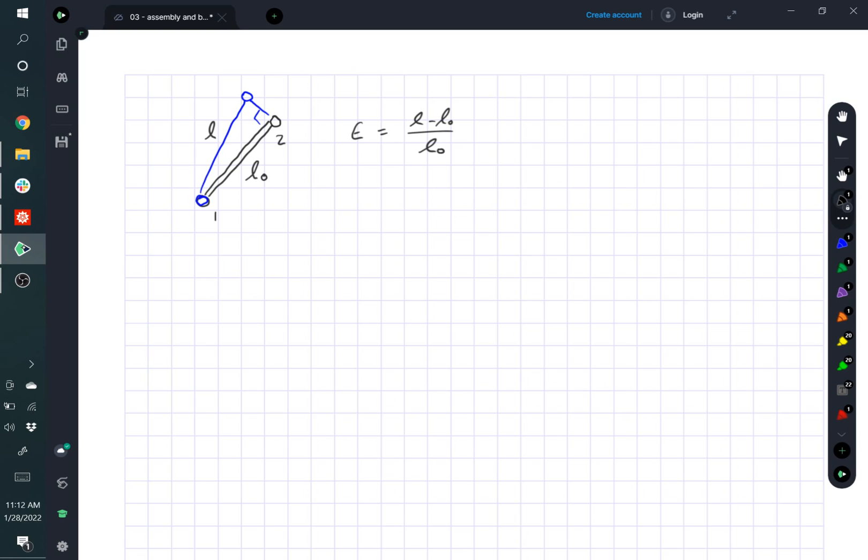It's not linear because of the way we calculate L. L is something like, you know, by the Pythagorean theorem, L is related to the displacement of U2Y by L squared is equal to U2Y squared plus L0 squared.